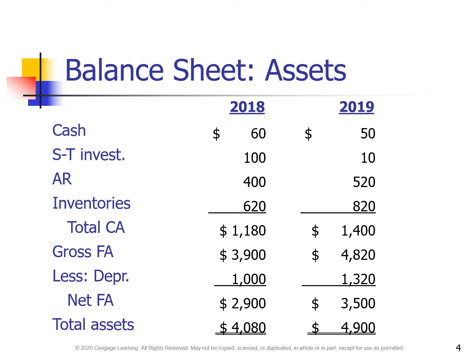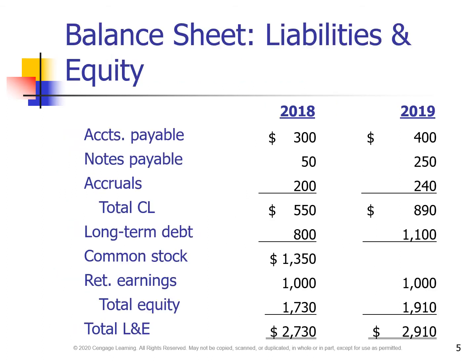The balance sheet is a statement of a company that shows the company's total assets, total liabilities, and owner's equity at a particular point in time. The total assets include current assets and fixed assets. The current assets include cash, short-term investments, accounts receivable, and inventories.